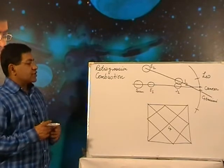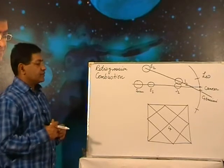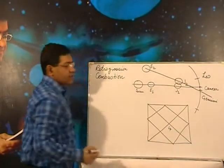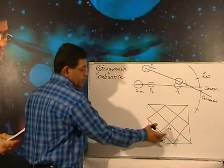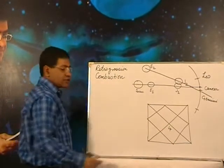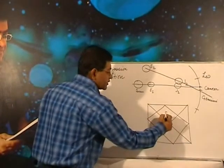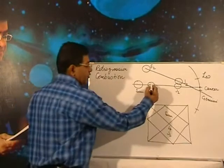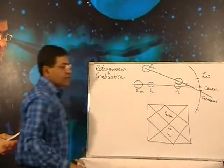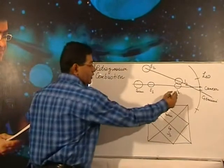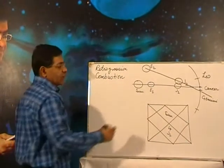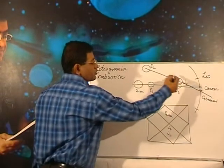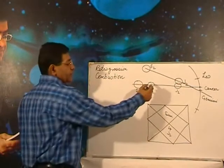How Retrogression takes place in the exterior planets: suppose this is the Sun, this is the Earth, and this is the Jupiter position at a given moment. If I cast it on the chart, the Sun is here and Jupiter J1 will be here. Jupiter, as we see from the telescope here, looks to be in Cancer. This is position number 1 of Jupiter.